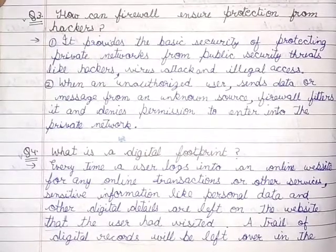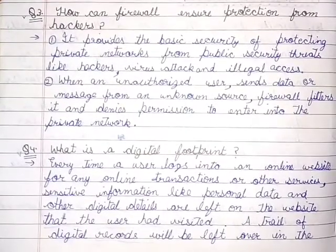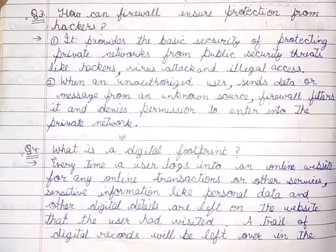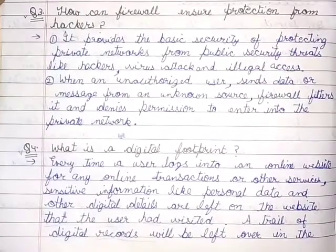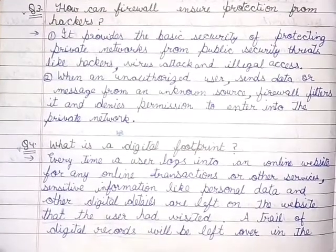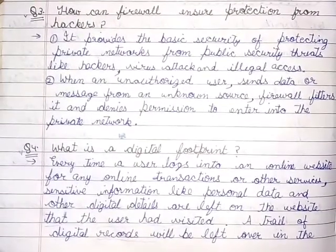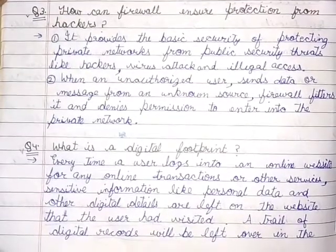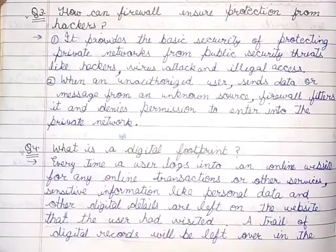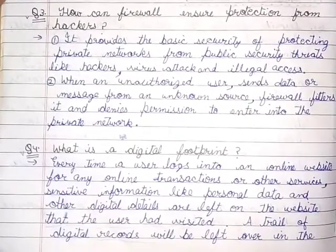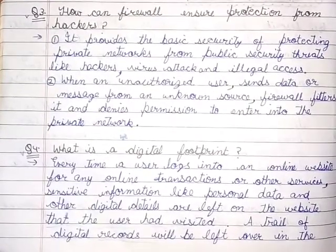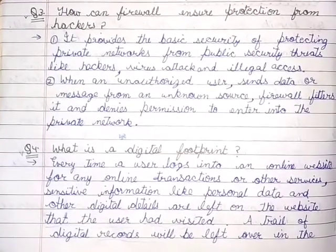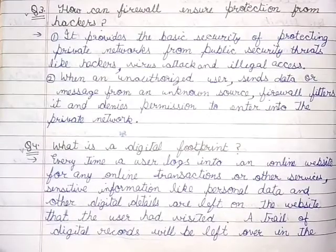Question 3: How can a firewall ensure protection from hackers? First, it provides the basic security of protecting private networks from public security threats like hackers, virus attacks and illegal access. Second, when an unauthorized user sends data or messages from an unknown source, the firewall filters it and denies permission to enter into the private network.